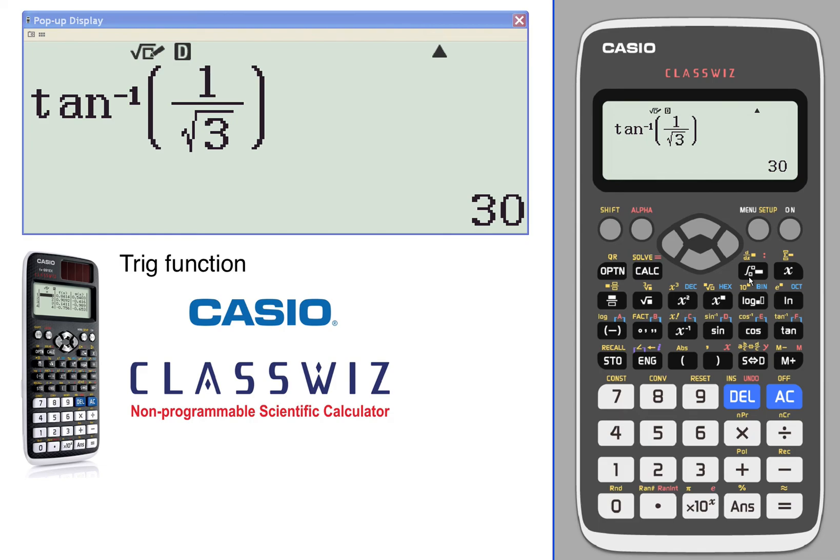So you can work backwards as well. Let's check the mode. D means degrees. R means radians. G means gradient. Yep. So you can work backwards as well.